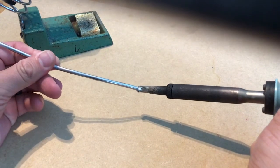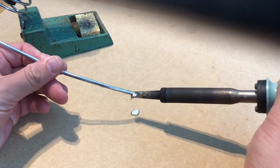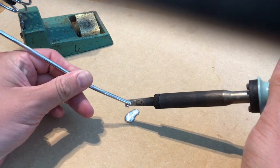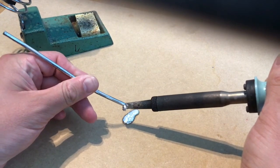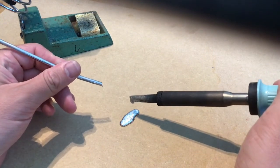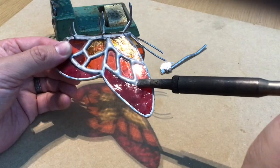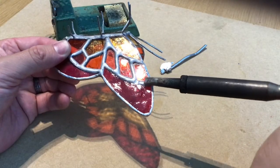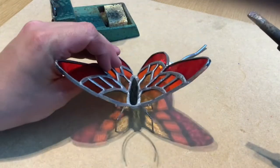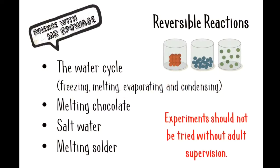The final example of a reversible change in this video is solder. This is a special type of metal that has a low melting point, so when it's pressed against a soldering iron, it can melt. Then when it's not heated, it re-solidifies. This makes solder really useful in electronics and in other things like glass making, because when it's re-solidified, you've got a metal that's nice and strong and able to bond things together. So these are just some examples of reversible reactions.